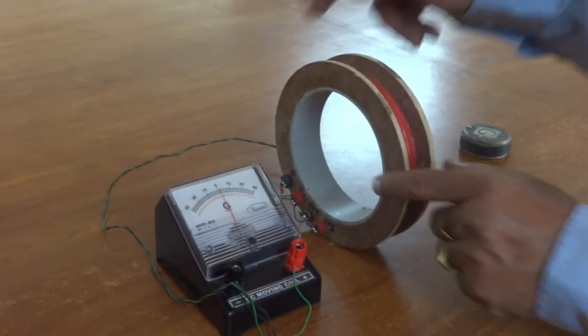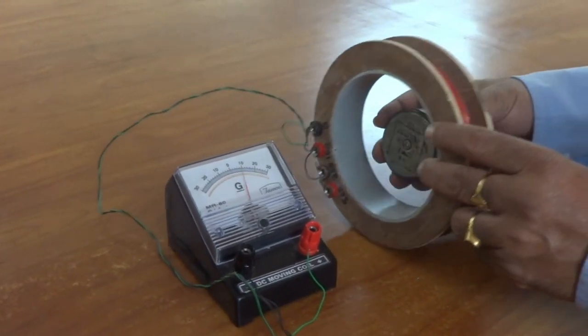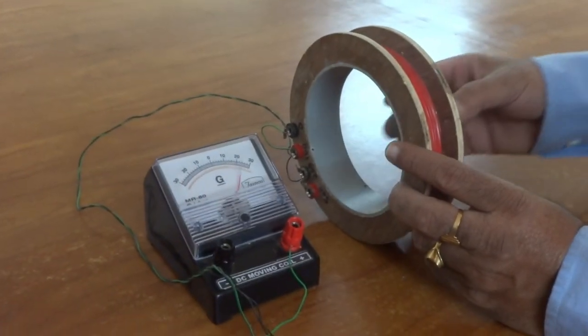Now, when a magnet is passed through this coil, you can see the deflection in the galvanometer.